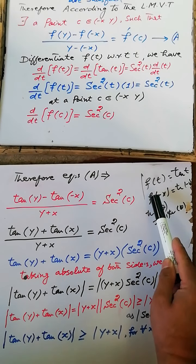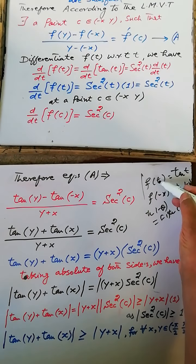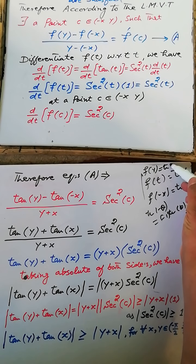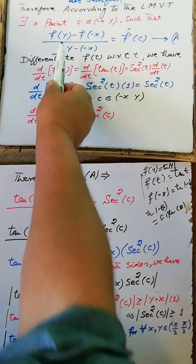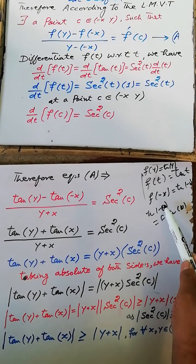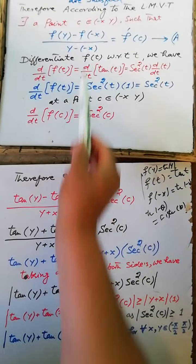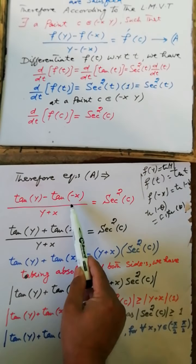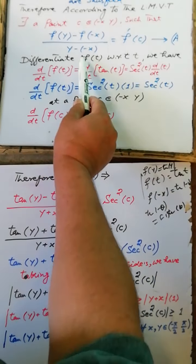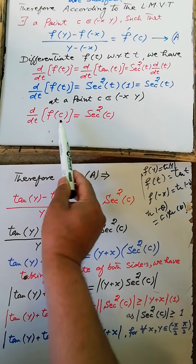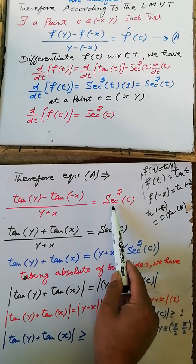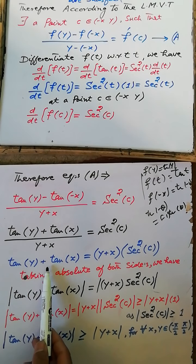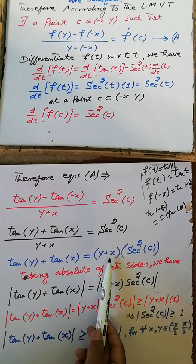Now substituting these values into the equation: f(y) = tan(y), and f(-x) = tan(-x) = -tan(x). So [tan(y) - (-tan(x))] / (x + y) = sec²(c). After simplification, the result is tan(y) + tan(x) = (y + x) · sec²(c).